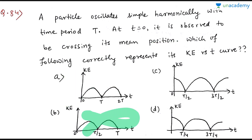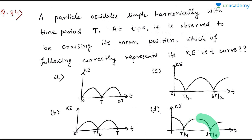In the remaining two options, KE is maximum at t = 0 in both. The difference is that in one graph KE becomes zero at T/2, and in the other at T/4. At t = 0 the particle is at the mean position, so it reaches the extreme position after T/4 time. At the extreme position, speed is zero, so KE is also zero. Therefore KE should be zero at T/4, not T/2. That gives us the correct answer.